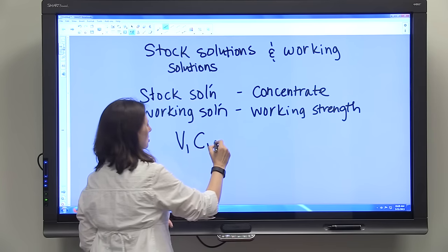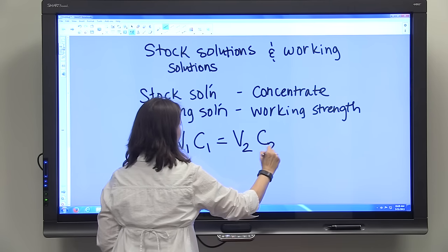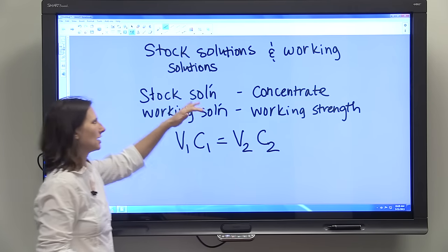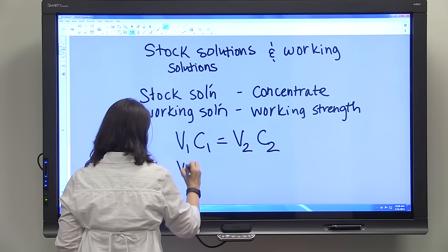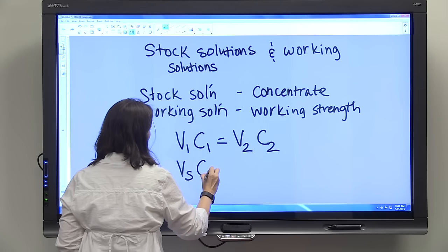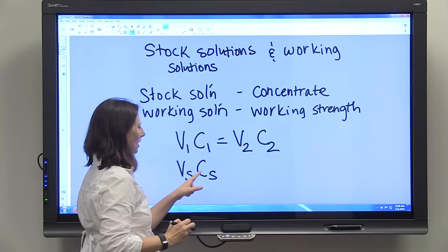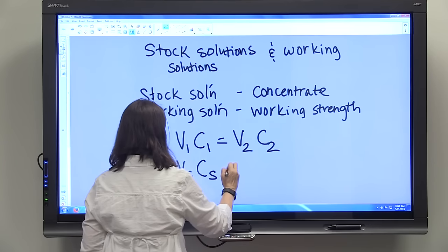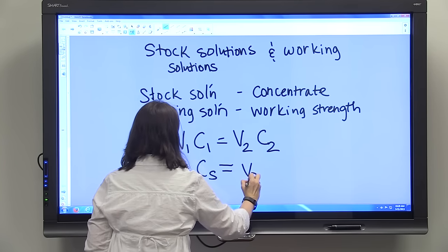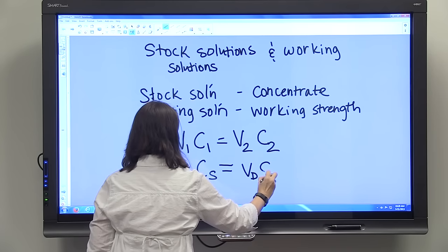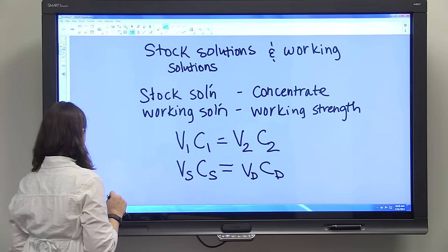In this case with stock solutions and working solutions, you can think of this using S for stock. VsCs is the volume of stock solution and the concentration of stock solution, which equals VdCd, the volume of the diluted solution and the concentration of the diluted solution.